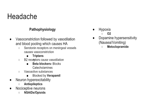There are beta-2 receptors on the meningeal vessels, and beta-2 receptors cause vasodilation. So if you block these beta-2 receptors, you're blocking the catecholamines and relieving that vasodilation. There are also some vasoactive substances that cause vasodilation and blood pooling. These substances are blocked by verapamil, which is a calcium channel blocker. So the first pathophysiology of headache is vasodilation and blood pooling.